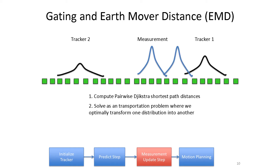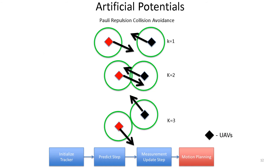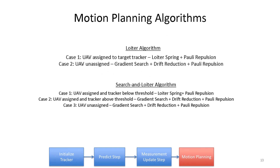The way we use earth mover distance is to move the measurement distribution on top of the tracker, compare how similar the two distributions are, and then based on that earth mover distance, determine which measurement should go to which tracker recursively for each measurement. We then determine where each UAV is going to move in the future to maximize the information it collects and detect as many targets as possible. We use a gradient force to move our UAVs up the likelihood, so on each time step they move to a location with higher likelihood, lowering or raising likelihood as they measure the ground below and then seeking areas of higher likelihood to detect targets in the future.